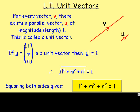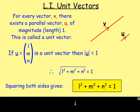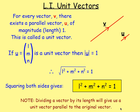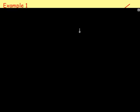So if you take the components, square them and add them, then you will get one if it is going to be a unit vector. How can you get the components of a unit vector if you know the original vector? Well, if you know the length of the original vector, then you can divide that original vector by its length and you will find the components of the unit vector. Let's try some examples with that.